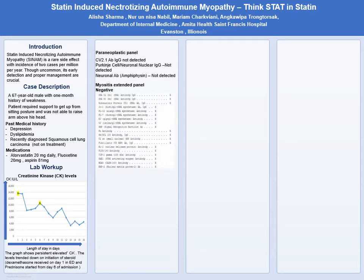We had an extensive panel done — a myositis extended panel and a paraneoplastic panel. These panels help differentiate between varieties of syndromes. The CV2 antibody helps in discriminating between chronic paraneoplastic neurologic disorder and other inflammatory disorders, whereas the myositis extended panel helps with two groups of myositis-specific antibodies and myositis-associated antibodies, which would also include connective tissue disorders and overlap syndromes.